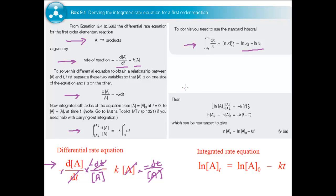If you integrate between the limits x1 and x2, this comes to log of x2 minus log of x1. So applying this to the left-hand side of our equation gives the log of the concentration of A at time t, minus the log of the concentration of A at time 0. To integrate the right-hand side, you need to know that the integral of 1 times dt is just t. Integrating between the limits 0 and t gives minus kt.